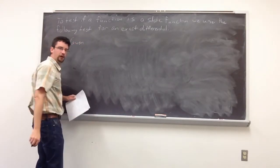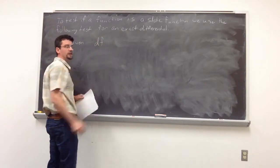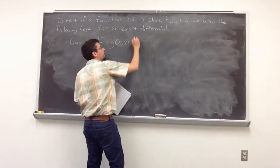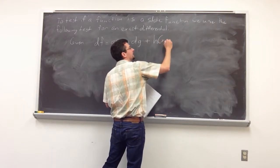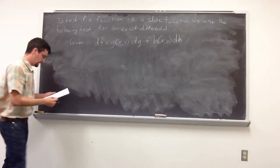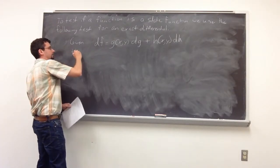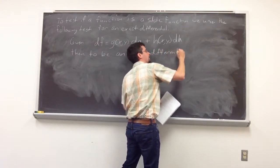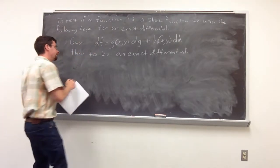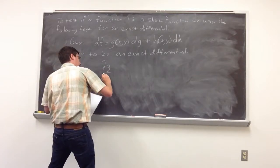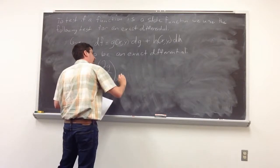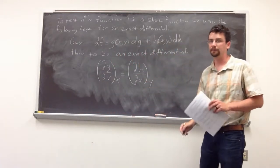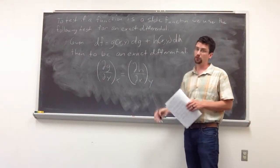Given we have some function and we're looking at a small infinitesimal change in that function, df is comprised of two other functions: g, which depends on x and y, times dx, plus h, which also depends on x and y, times dh. To be an exact differential, the following must be true: the partial derivative of g with respect to y keeping x constant must equal the partial derivative of h with respect to x keeping y constant. If it isn't true, it's a path dependent function. If it is true, it is a state function.